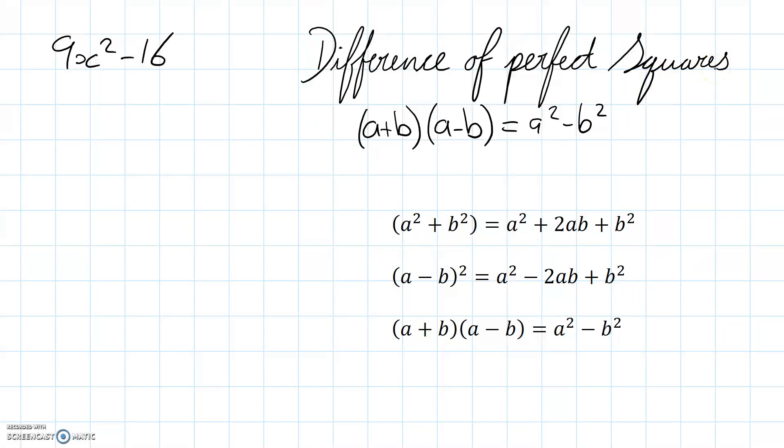This process uses one of these different products that are fairly useful to be aware of when you're factorising these sort of problems. The one down the bottom here is called the difference of two squares: a² minus b², the difference of two squares.